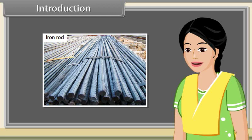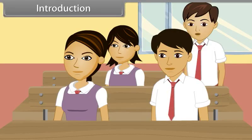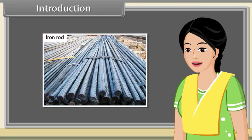Euclid described a line as breadthless length and introduced several postulates as basic, unprovable properties from which he constructed geometry. Do you know what we call that geometry? We call it Euclidean geometry. Yes, you are right, Rahul — Euclidean geometry.